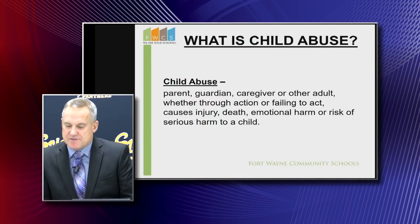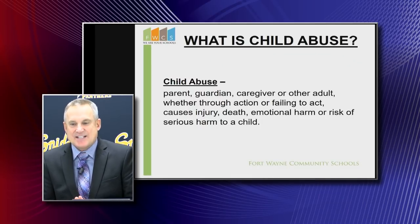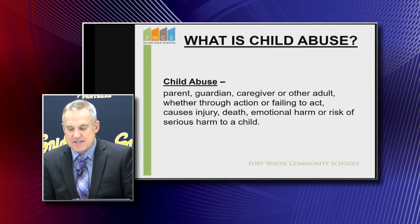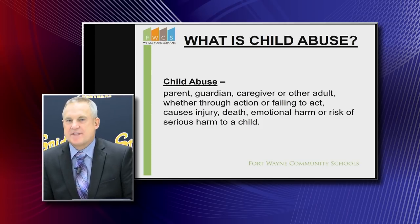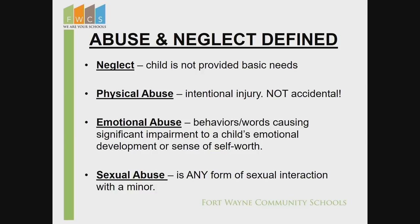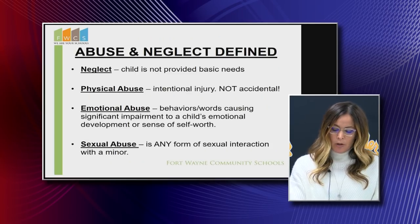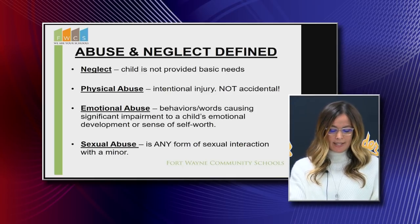When we talk about the abuse of a child, we need to remember that it is not only the act of causing serious injury or harm to a child. It is also failing to report that serious injury or harm, or being a person standing by and failing to act to prevent it. So now we're going to look at the different forms of abuse.